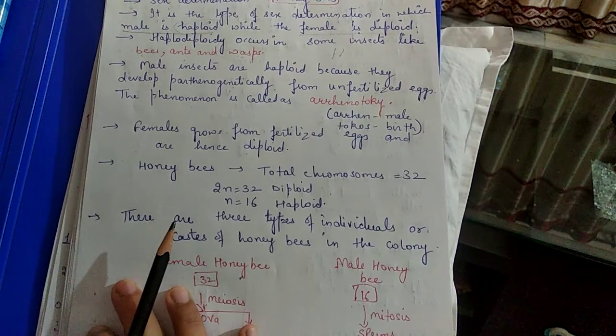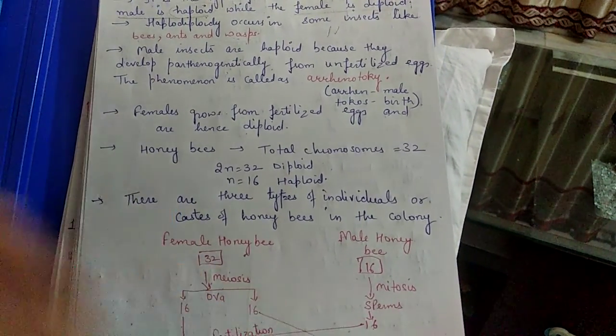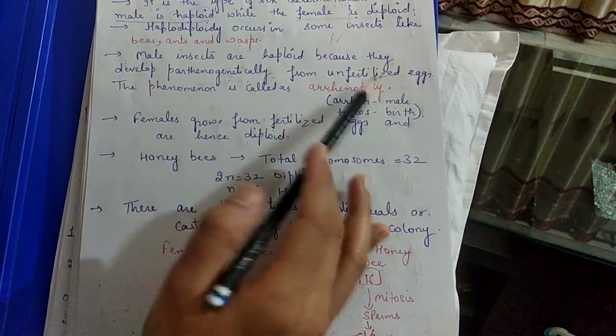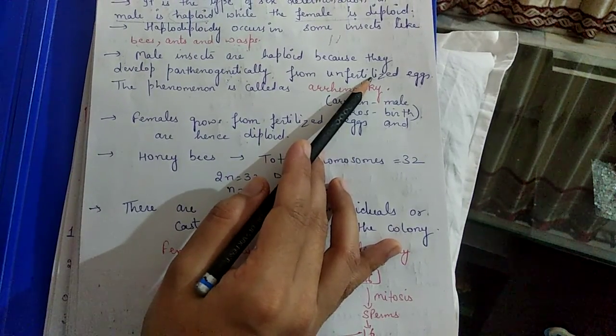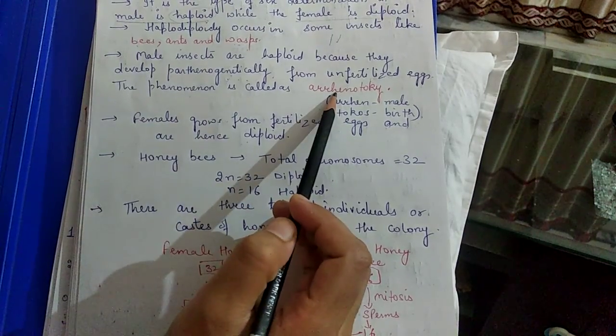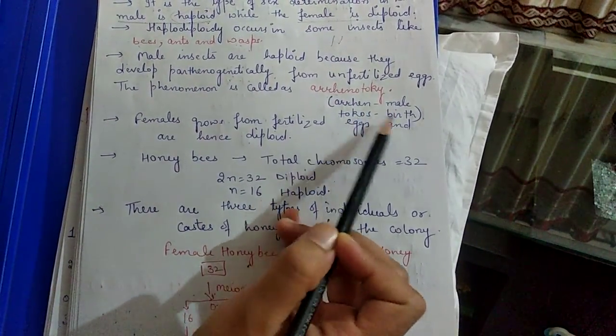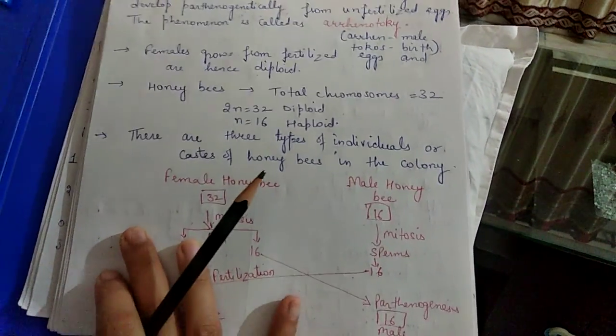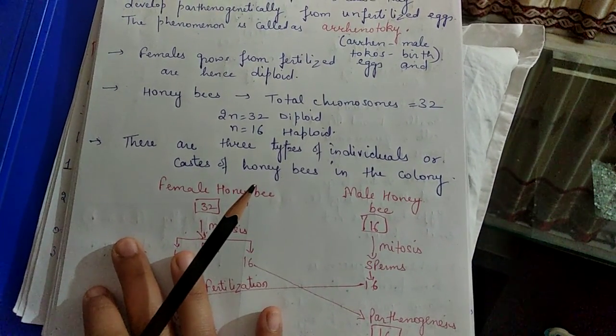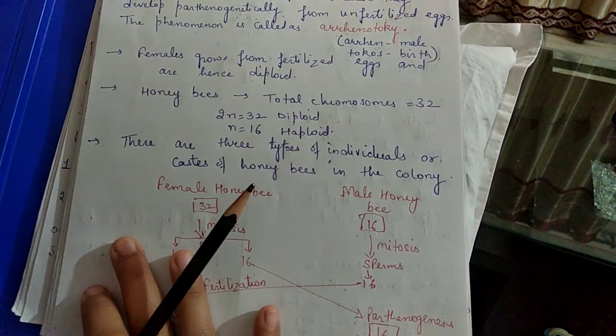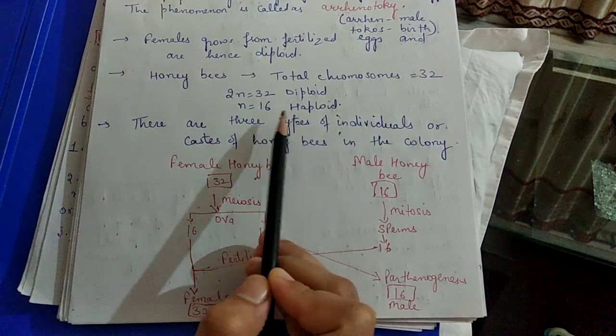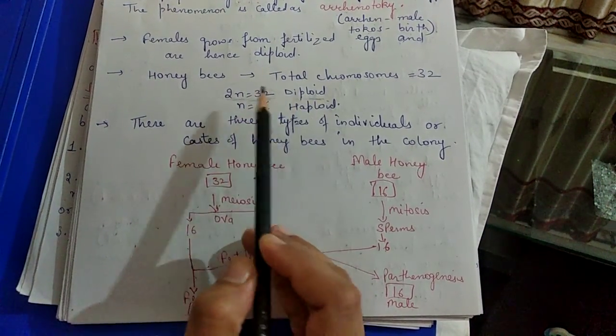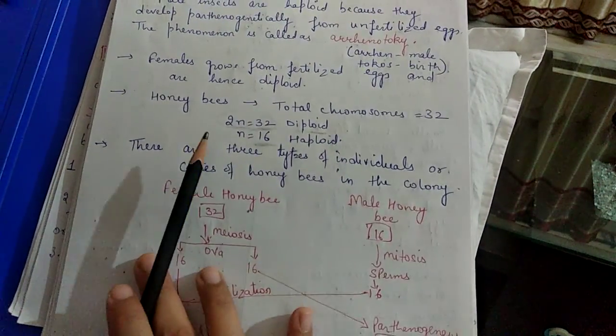Haplodiploidy is found in some other insects also: bees, ants, and wasps. Male insects are haploid. A question comes: why are males haploid? Because males develop parthenogenetically. We studied parthenogenesis definition in first unit - organisms that develop from unfertilized eggs. This is called arrhenotoki or parthenogenesis. Arrhen means male, tokos means birth. Specifically arrhenotoki means from this process males are formed. Males are haploid. Females develop from fertilized eggs, that's why they are diploid. In honeybees, total chromosomes are 32 - that means 16 pairs. This 16 pairs is diploid condition. Half of that is only 16 chromosomes total, which is haploid condition.